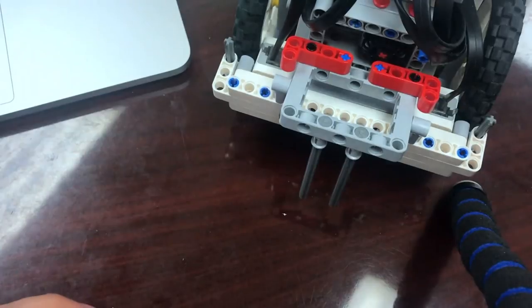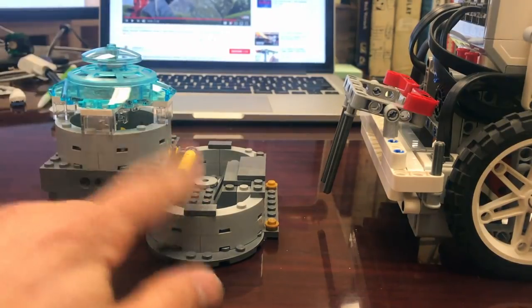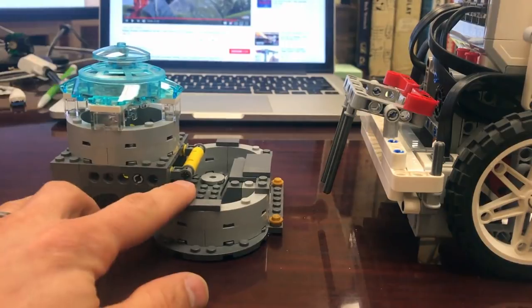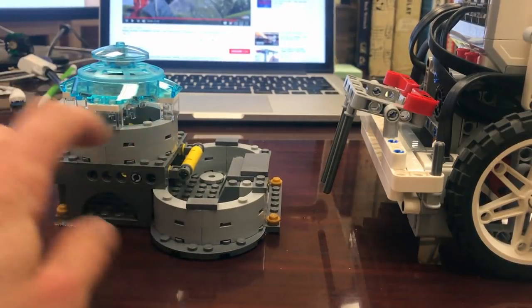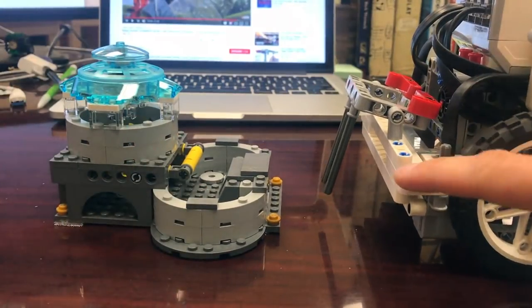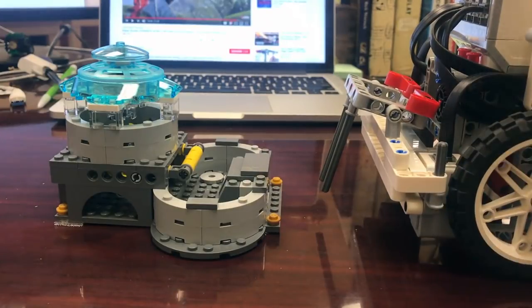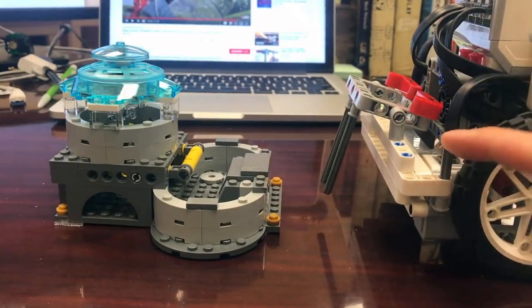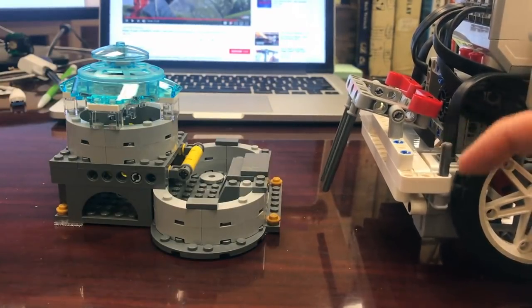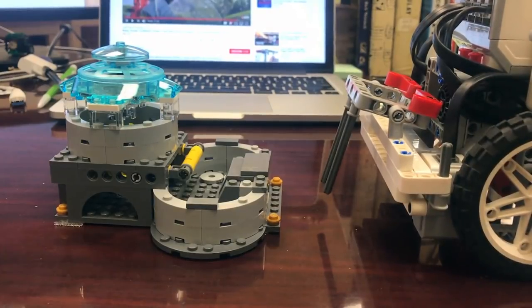So let me show you how it works. So here I have the fountain mission from the Lego First Lego League hydrodynamics game and the attachment that we just built is on our robot using the axle mounts for the quick attachments that are passive that doesn't require a motor.